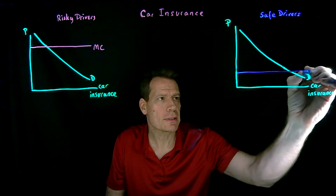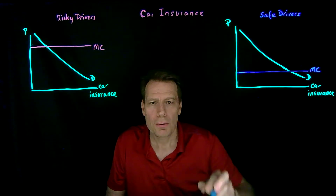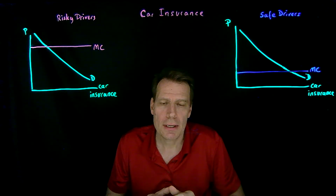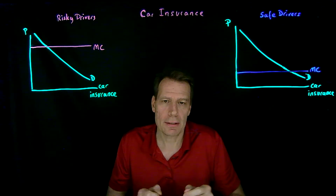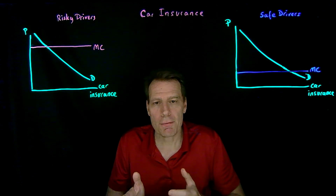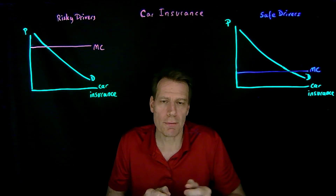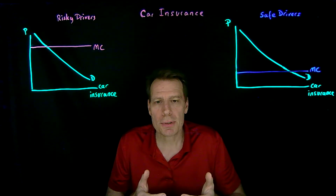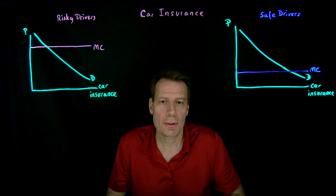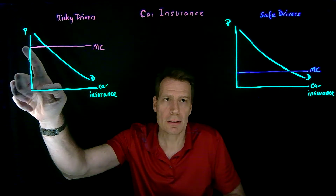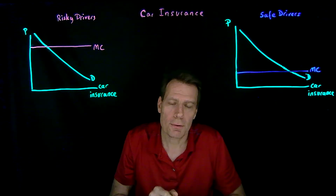If insurance companies can tell who are the safe drivers and who are the risky drivers, they'll simply treat them differently. There'll be separate markets for car insurance for risky drivers and for safe drivers. And if those markets are competitive, then insurance companies are going to price where price equals marginal cost. So risky drivers are going to get a high price and safe drivers are going to get a low price.